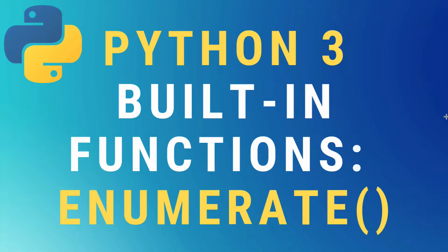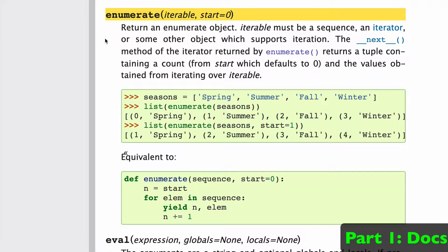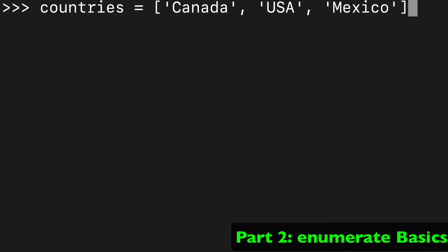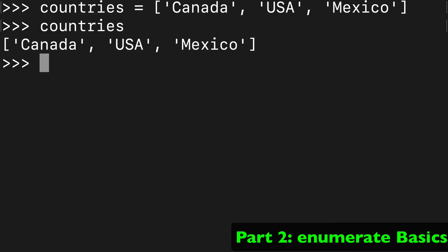Today we're going to talk about the enumerate built-in function in Python 3. Let's take a quick look at the docs — enumerate is pretty simple. It takes one required argument of iterable, so you can pass any iterable to it, and then it has one optional argument of a start. To get started, let's create a list of countries: Canada, USA, and Mexico.